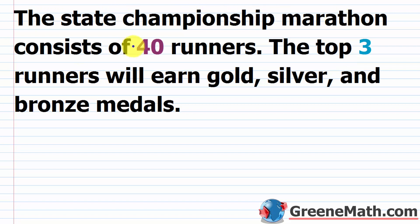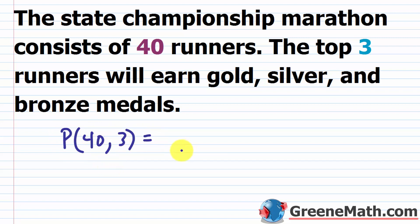The state championship marathon has 40 runners, and the top three earn gold, silver, and bronze medals. Repetition isn't allowed, and the order definitely matters — finishing first means gold, finishing second means silver. So we use the permutation formula: P(40, 3). Punching 40, then the NPR key, then 3 into your calculator gives 59,280.